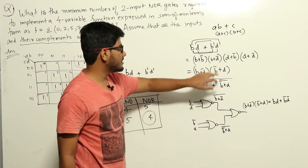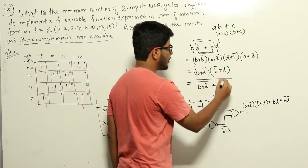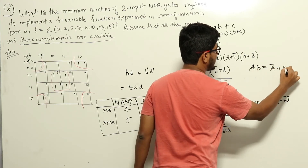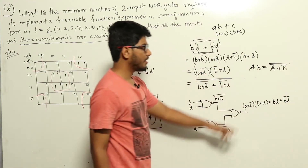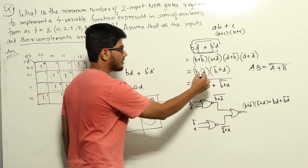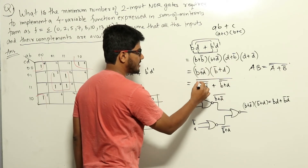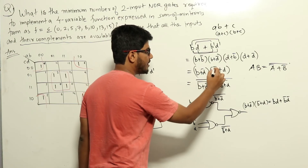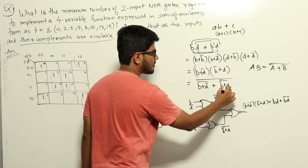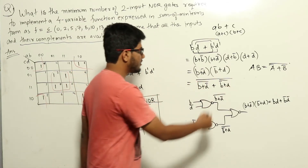We can write AB as (A' + B') complement by De Morgan's law. So the product (B + D')(B' + D) can be rewritten as: [(B + D') complement + (B' + D) complement] complement. Each inner term — something plus something, complemented — is a NOR gate output, and the outer complement of a sum is also a NOR gate.